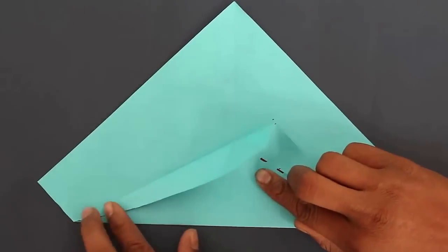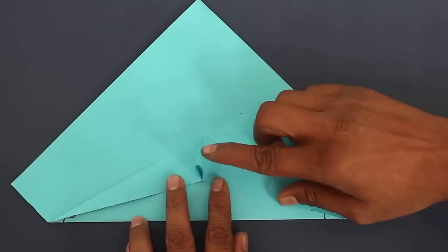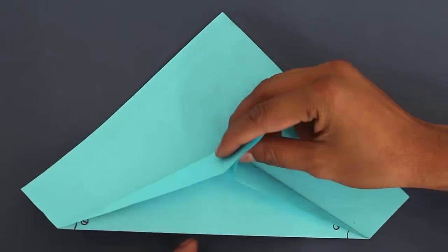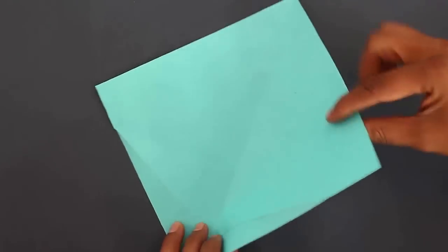Now fold two skewed triangles in the small triangle. The fold should be one third of the whole angle. Both skewed triangles should meet on the diagonal line.